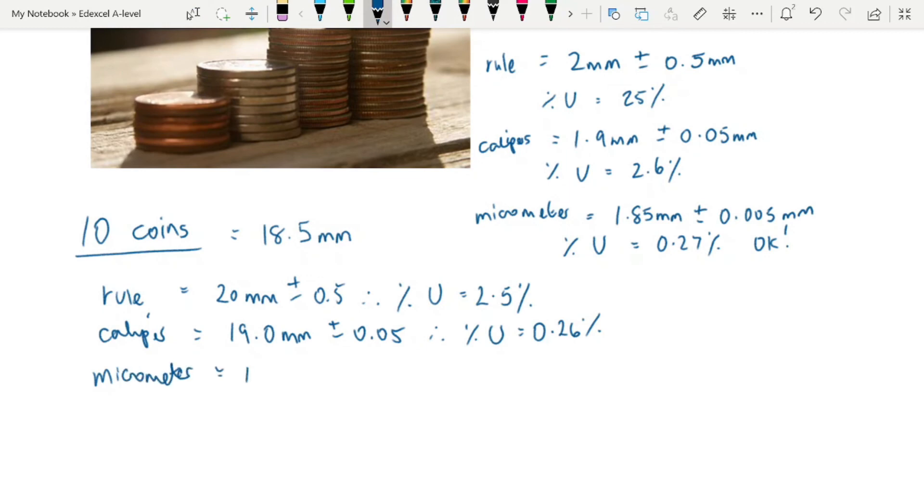We would have 18.50. And you'll note, I'm being very careful with my decimal places here, 0.005, giving us a percentage uncertainty of 0.03%.